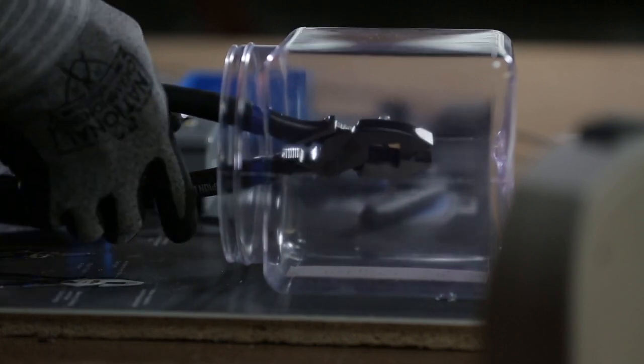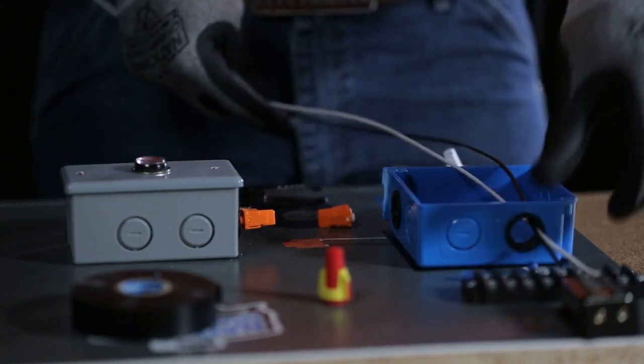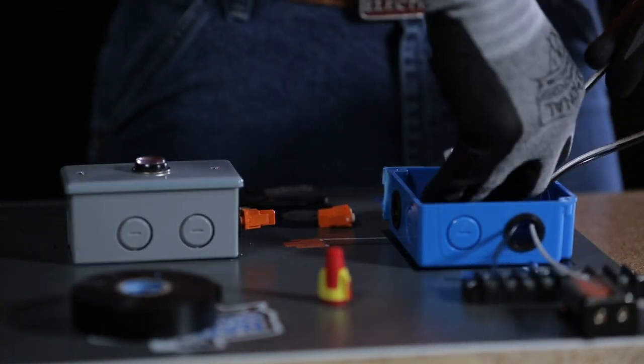Start by cutting the screw inside the clear plastic container using the Ideal Linesman pliers. Next, feed the white and black wires through the electrical box.